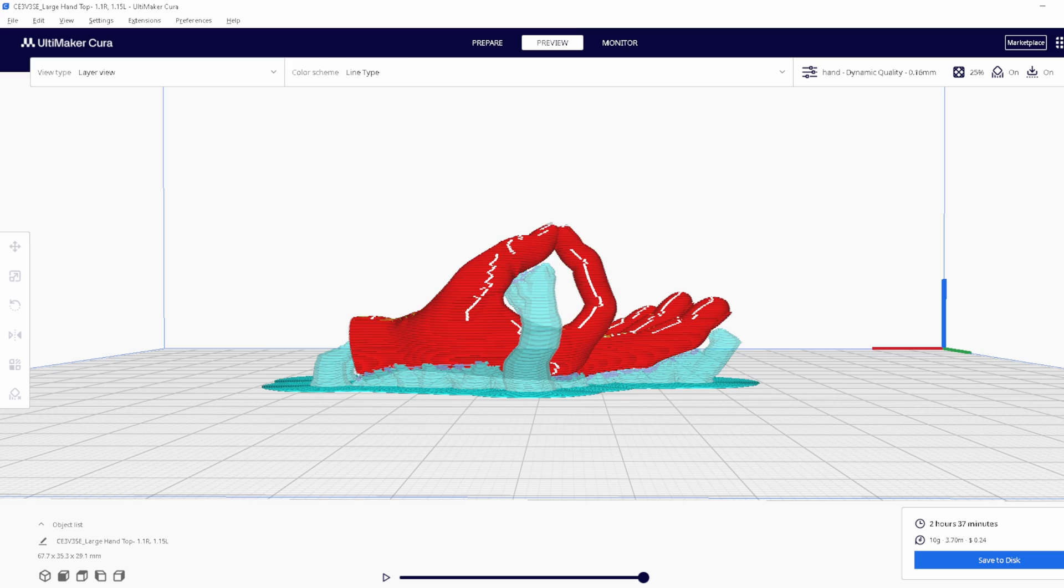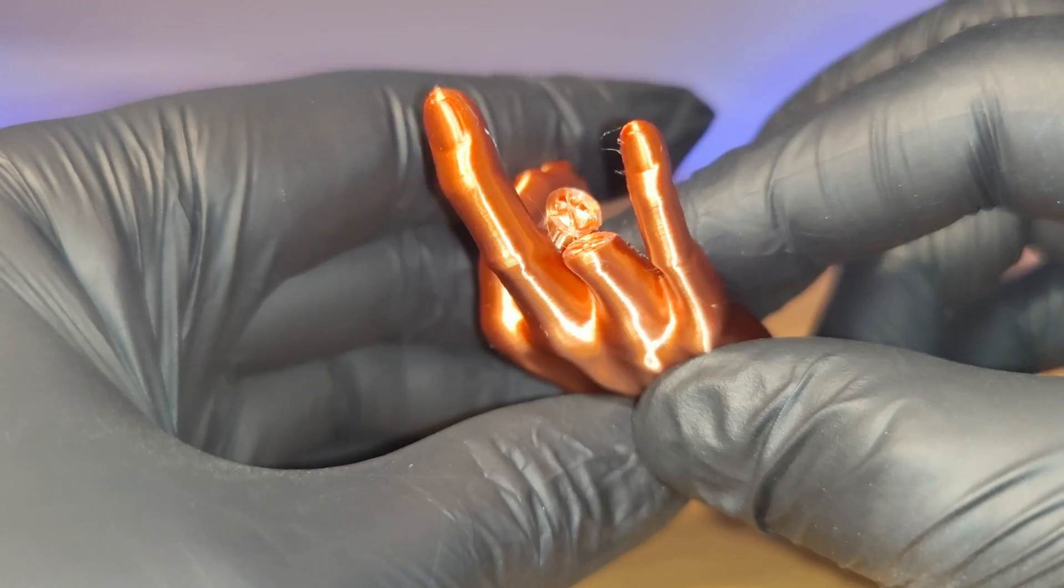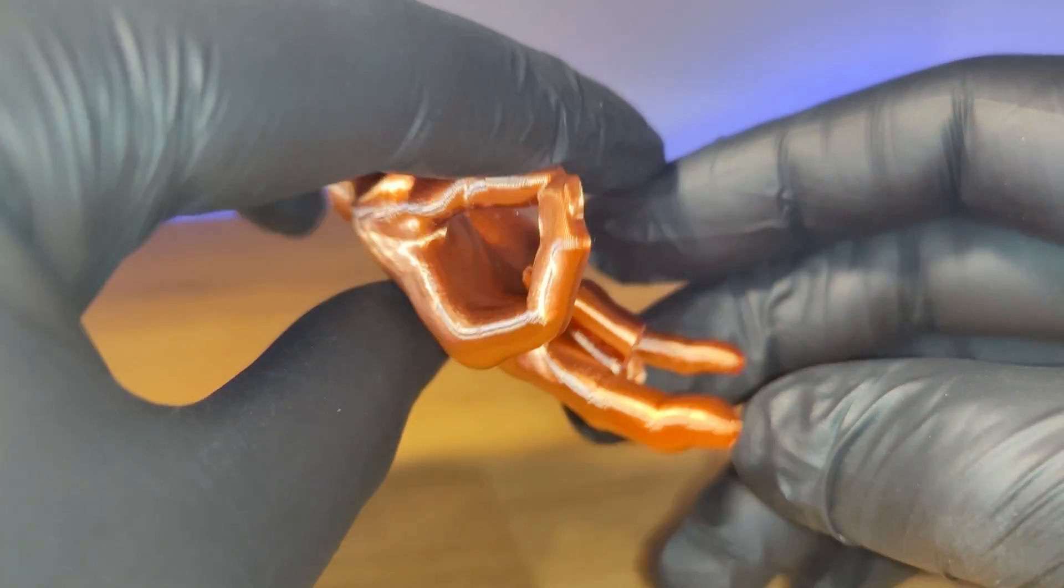Now if you were to print this laying down, it would be really strong but wouldn't look very good. But if you were to print it standing up, it would look really good but it wouldn't be very strong. So here is where diagonal printing comes in.